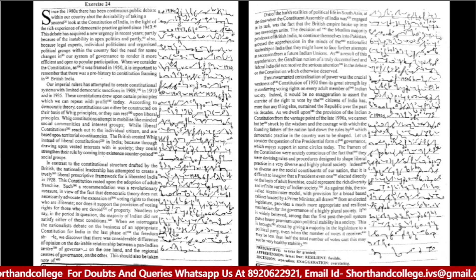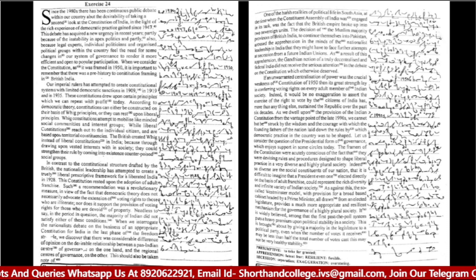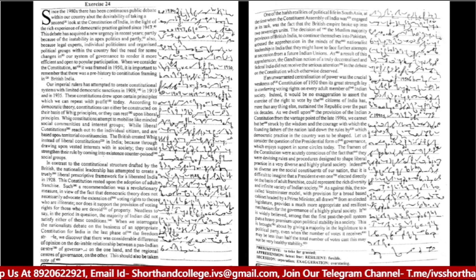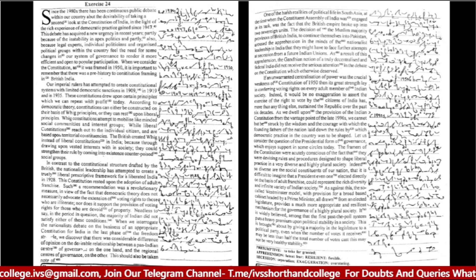As a result of this apprehension, the Gandhian notion of a truly decentralized and federal India did not receive the serious attention in the debate on the constitution which it otherwise deserved. If an unwarranted centralization of power was the crucial weakness of the constitution of 1950, then its great strength lay in conferring voting rights on every adult member of Indian society.